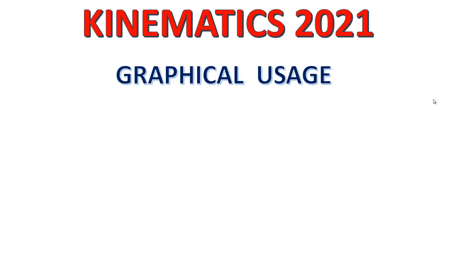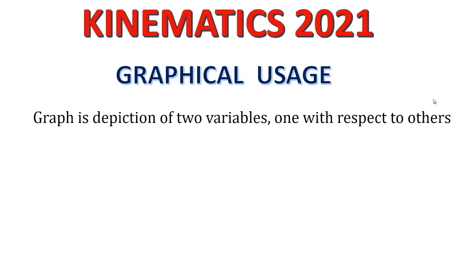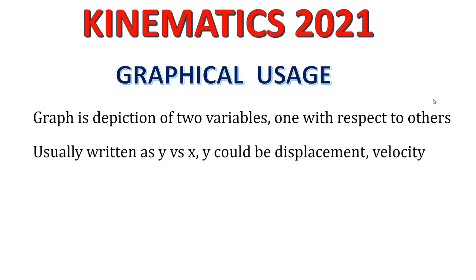Welcome students. One of the very important things being used in physics is the graph. We'll be first talking about graphs related to kinematics, but you must understand graph as a whole — it is very important throughout physics. The knowledge of graph is going to help you study complete physics in a better fashion. Graph is the depiction of two variables, one with respect to the other — how one variable varies with another. It is a two-dimensional system just like a Cartesian system, with an x-axis and y-axis, and is usually called y versus x, where y could be displacement, velocity, acceleration, force, or anything.